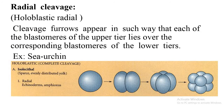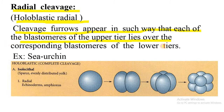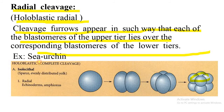Next is radial cleavage — holoblastic radial cleavage. Here, cleavage furrows appear in such a way that each blastomere of the upper tier lies over the corresponding blastomere of the lower tier. The blastomeres of the upper tier correspond to those of the lower tier. An example is the sea urchin.